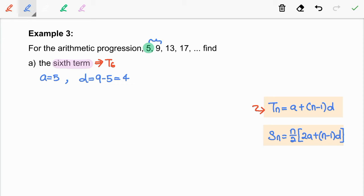So, we are going to plug in the values of A, D and also N into the formula. So, T6 is equal to 5 plus 6 minus 1 times 4 and this gives us 25.